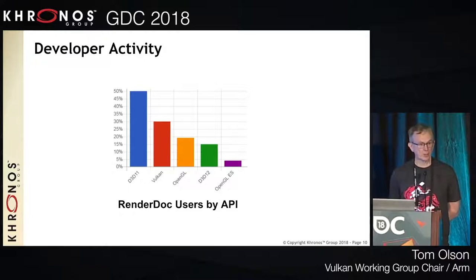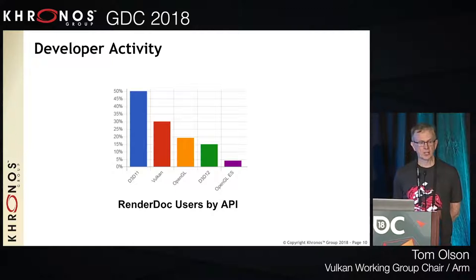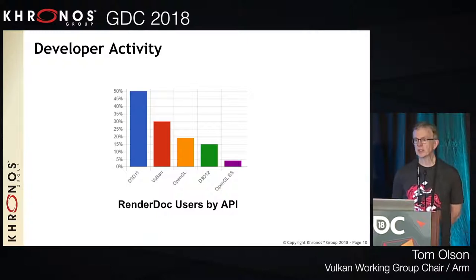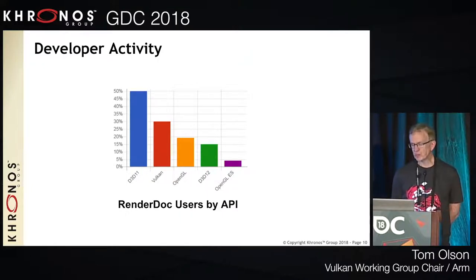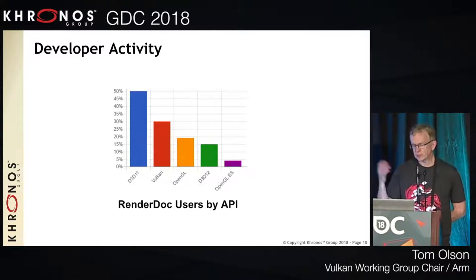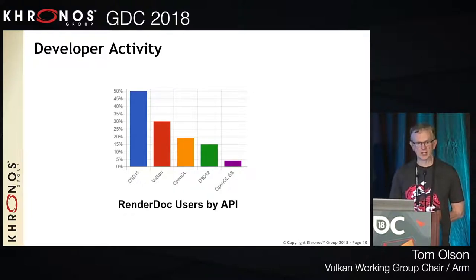Another interesting data point: Baldur, the tech lead for RenderDoc, tracks what developers are using RenderDoc for as market research. The stats show that Vulkan is second only to DX11 as a target for RenderDoc use. There could be many reasons for that, but it seems like a good sign — there's a lot of activity and the activity is growing.